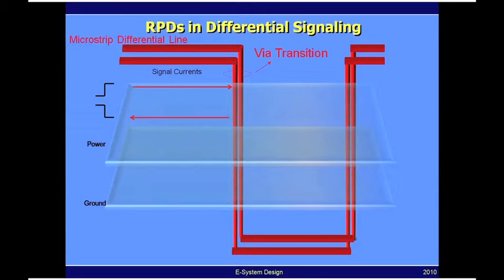But at the same time, since these lines are referenced to the power and ground planes, you also create return currents flowing on the power planes in opposite directions. If you design these differential lines well, where they are right next to each other with constant coupling between them, these two return currents on the planes will actually cancel each other.